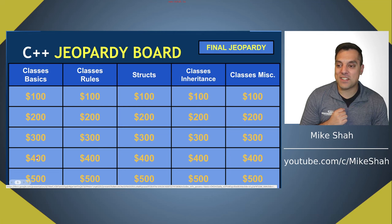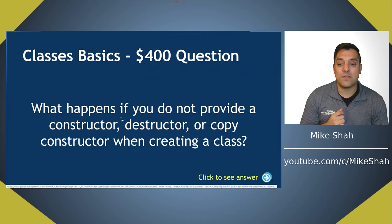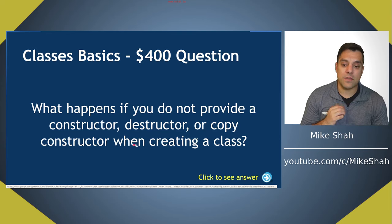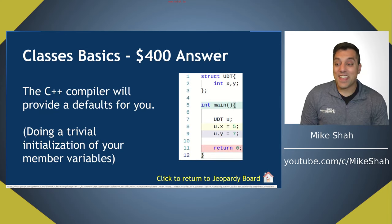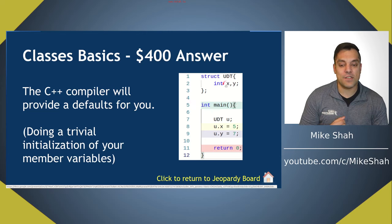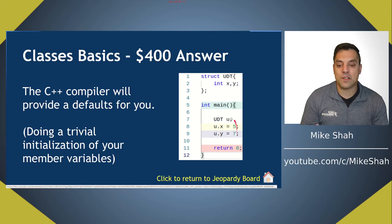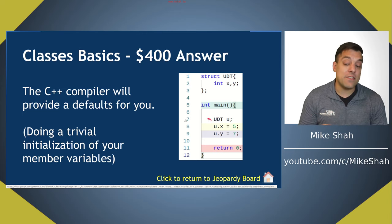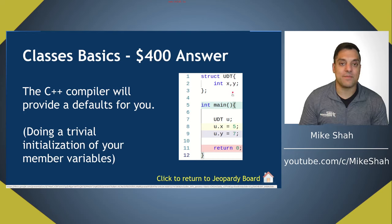For 400: what happens if you do not provide a constructor, destructor, or copy constructor when creating a class? The answer is that the C++ compiler will provide defaults for you. You can create a struct with x and y and still initialize that object because we have a compiler-defined default constructor. When compiler-generated, these defaults are trivial — just enough to allocate memory for x and y.